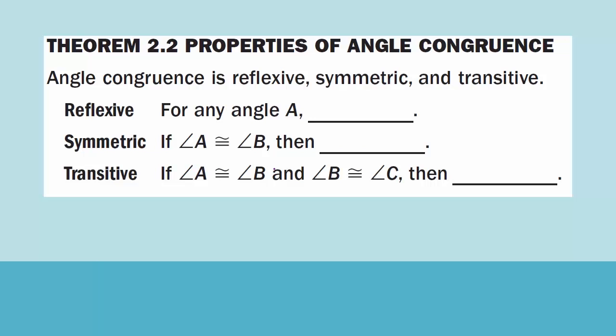Theorem 2.2: Properties of Angle Congruence. Angle congruence is reflexive, symmetric, and transitive.